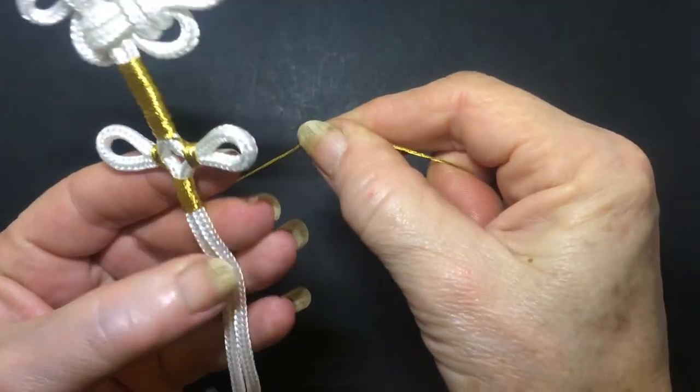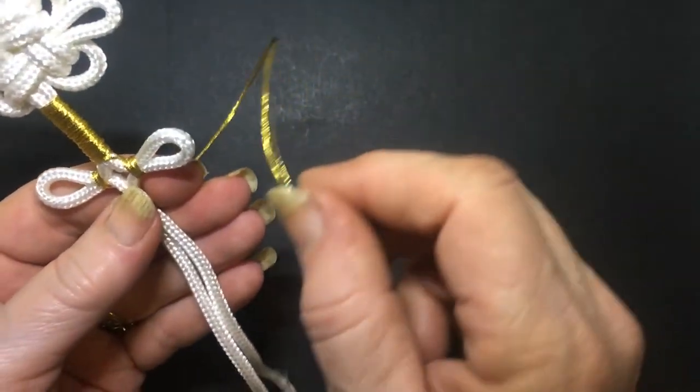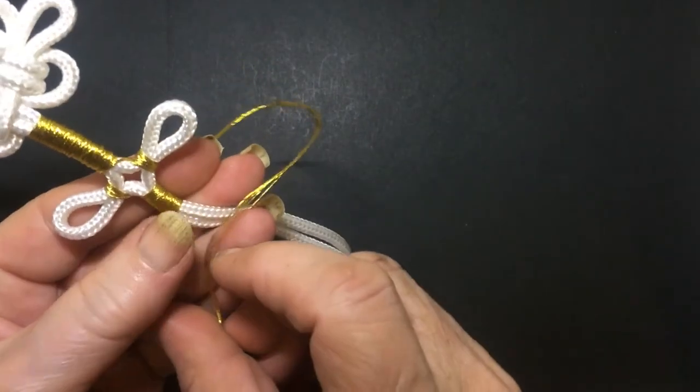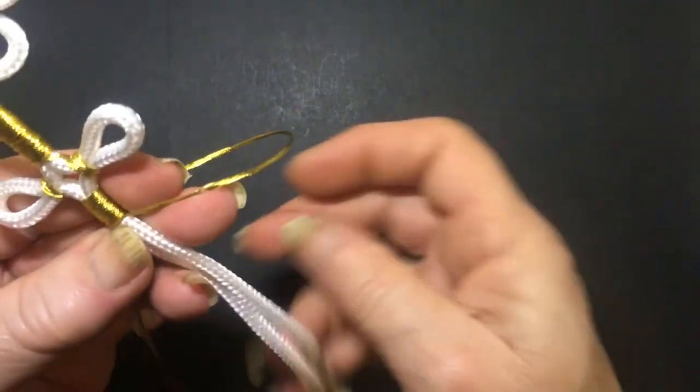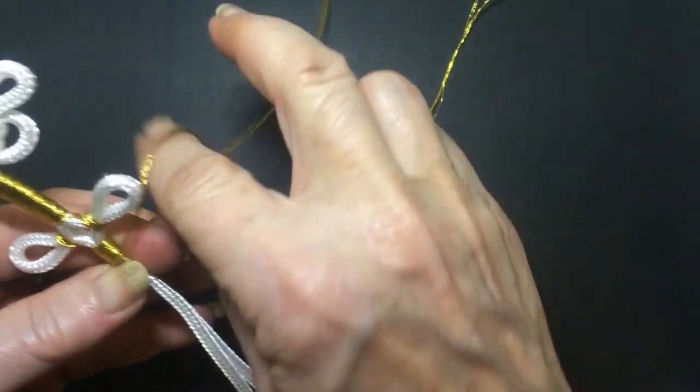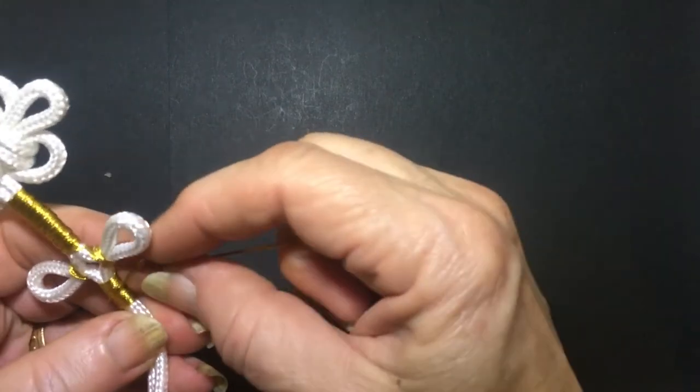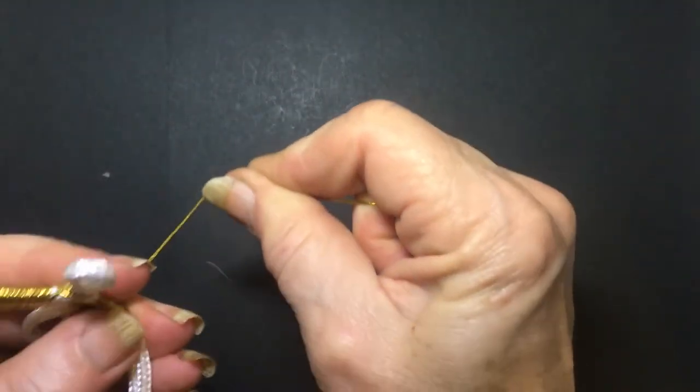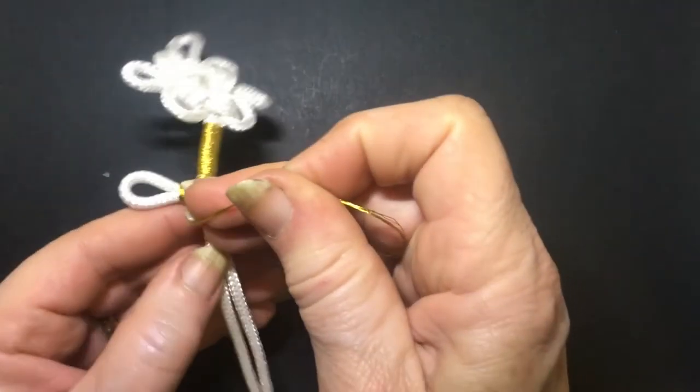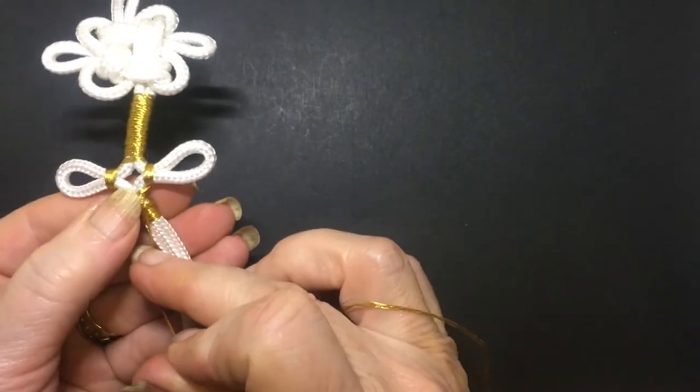Once you've gone down your one centimeter once again, make a loop and then pass the thread through that loop to secure it. And then just take your glue and glue it down at the back.